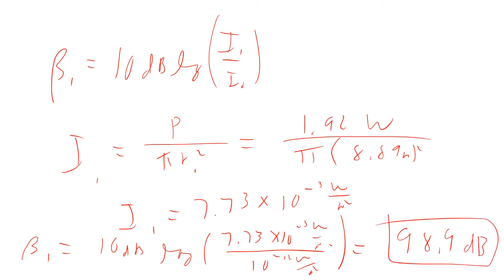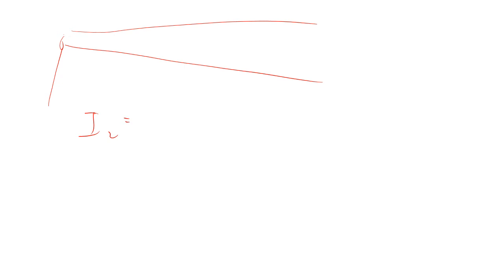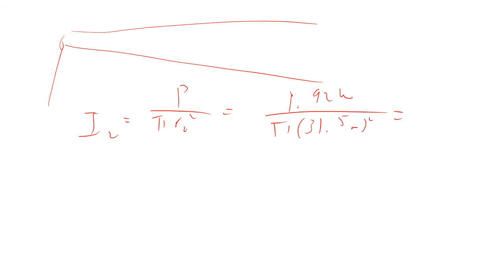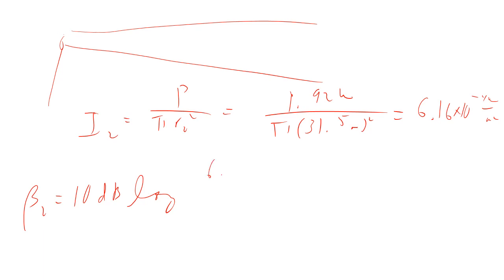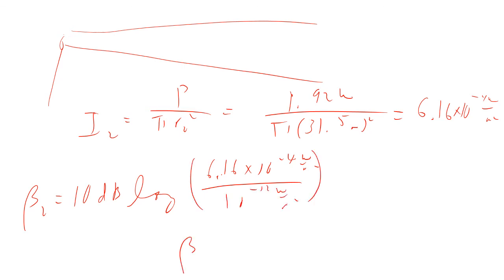For person 2 with the horn, I₂ = 1.92 W ÷ (π × (31.5 m)²) = 6.16 × 10⁻⁴ W/m². So β₂ = 10 × log(6.16 × 10⁻⁴ / 10⁻¹²) = 87.9 decibels.